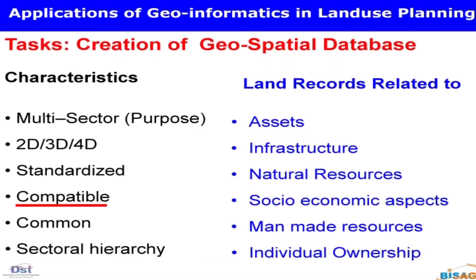The Government of Gujarat decided two things: whatever you make, it should be multi-sector, multipurpose, and common. We added three more things: it should be 2D, 3D, and 4D with respect to time, and it should be standardized and compatible. Every dataset every department is creating — if put together it is not compatible, hence analysis cannot be done.